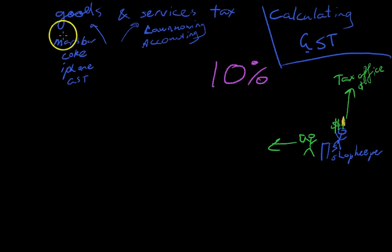So the GST on everything, whether it's Mars Bars, or Cokes, or iPhones, or lawn mowing, or accounting, is 10%.